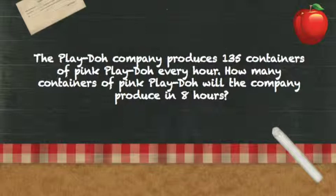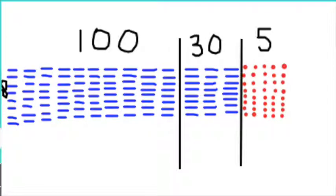The first strategy is a pictorial representation of 135 by 8. We will be using base 10 blocks to model 8 rows of 135.